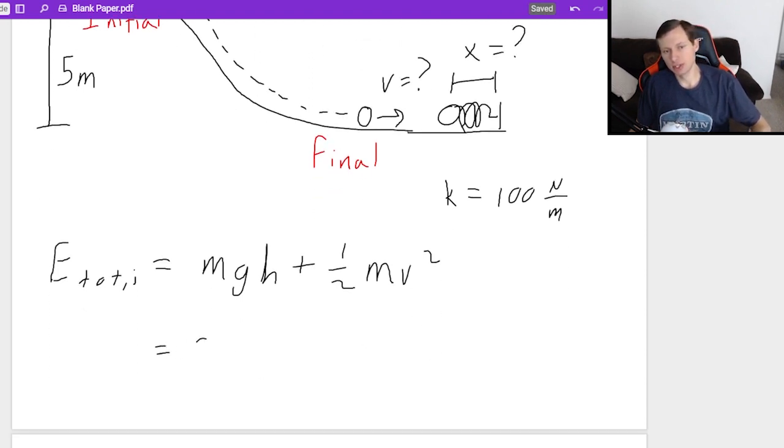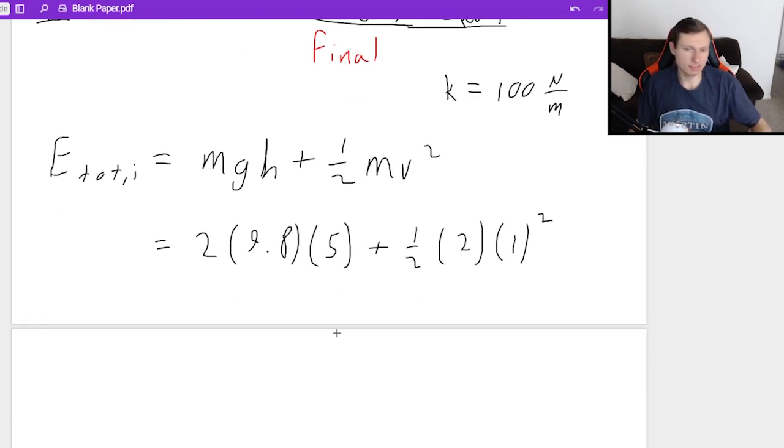And there's no spring potential at the top because there is no spring at the top. So now we can fill in these variables. The mass was 2. G is 9.8. And the height is 5 plus one half mass again is 2. And velocity is 1 squared. Let's see what I get when I plug this in a calculator. Wow, would you look at that? 99. And the units for energy, by the way, are joules. It's the same units for work, which maybe that means we'll deal with work in a later video with energy. Who knows? That's a yes, by the way. But not right now because we're just talking about energy. So 99 joules.